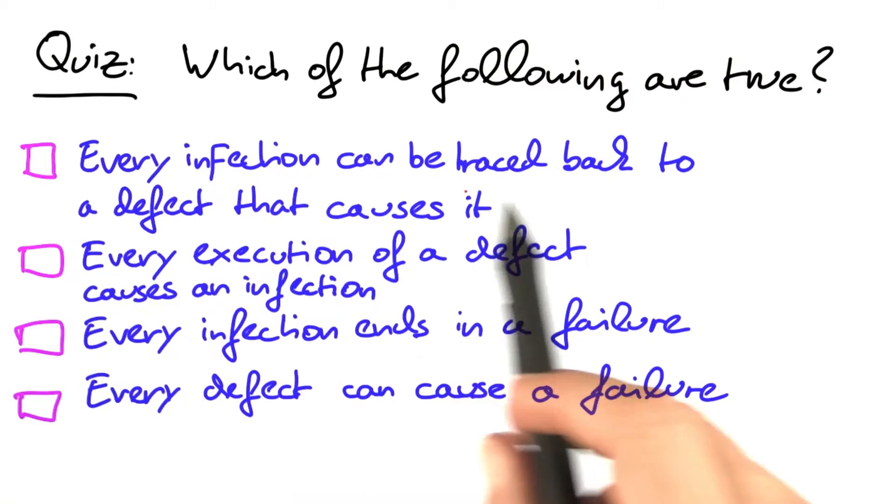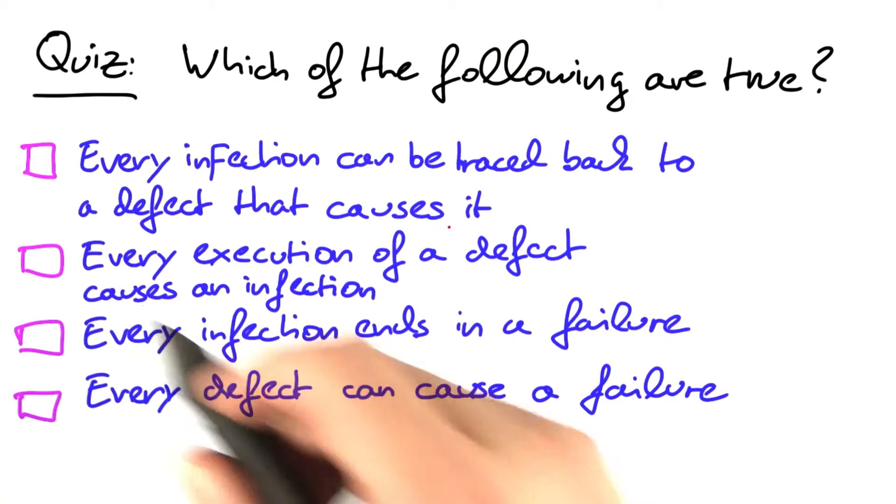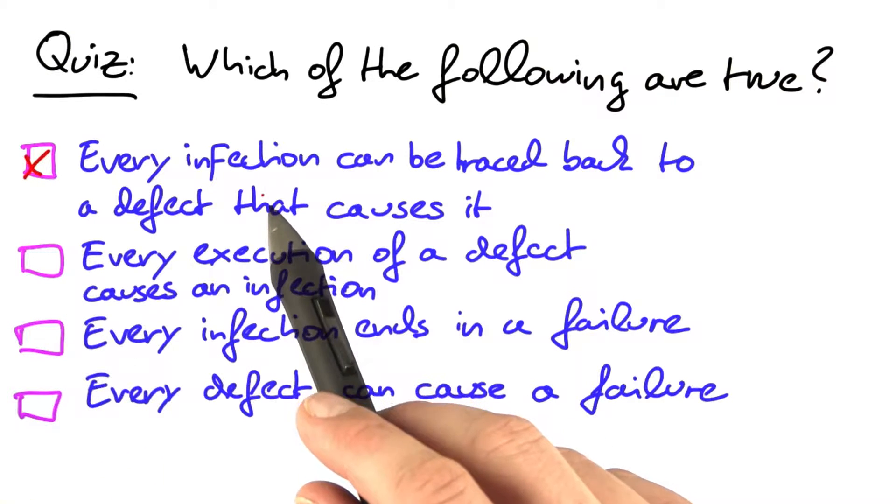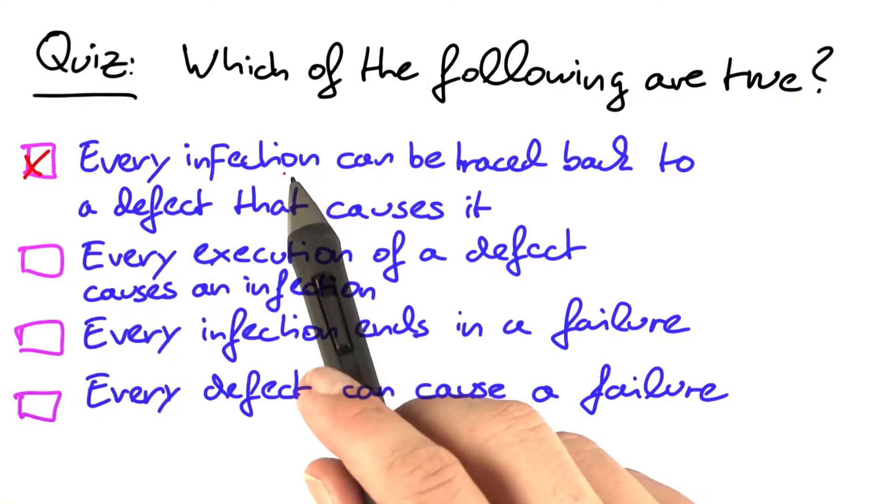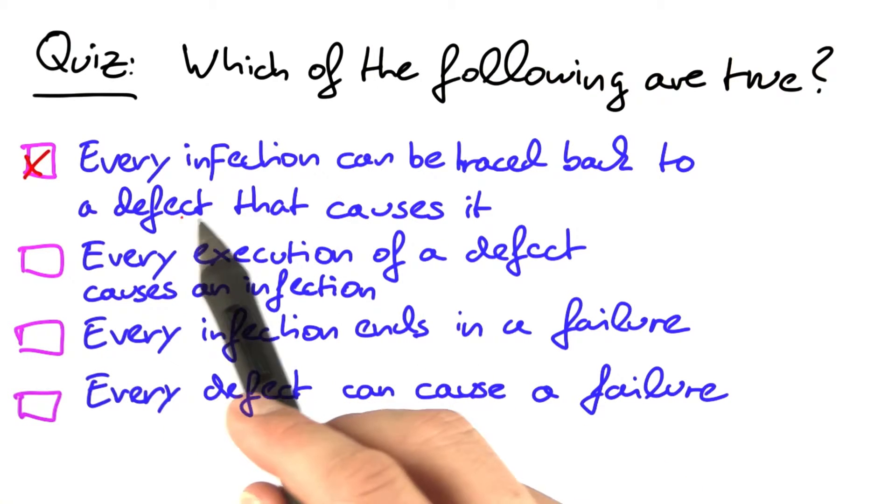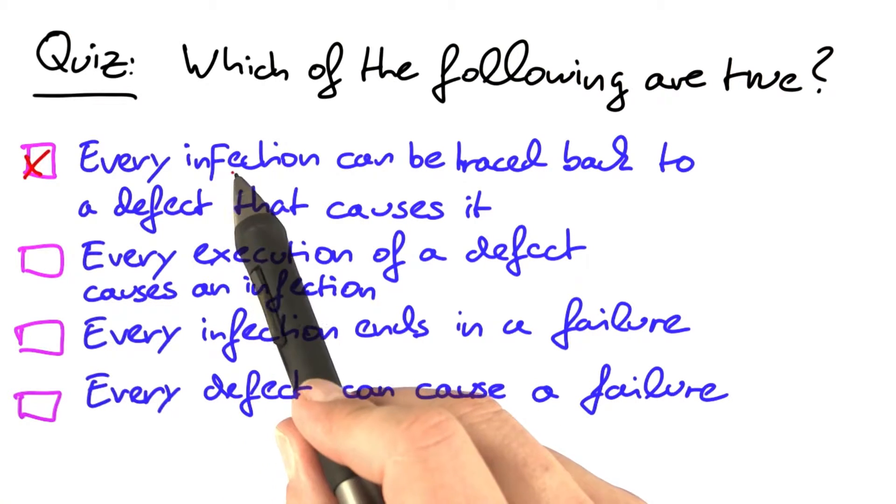First, every infection can be traced back to a defect that causes it. This is actually correct because if we have an infection, if we have an error in the program state that is, we can find out which defect causes it, namely the piece in the program which got a sane state as input and which produced an erroneous state, an infection, as output.